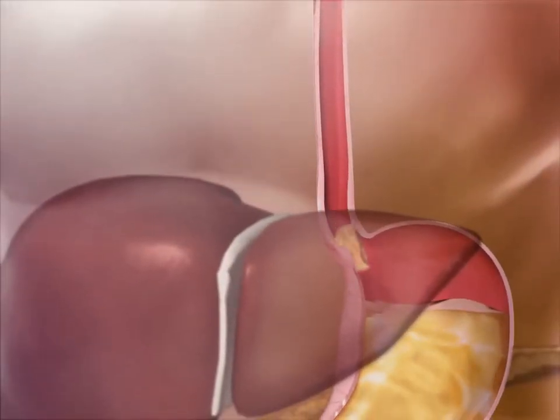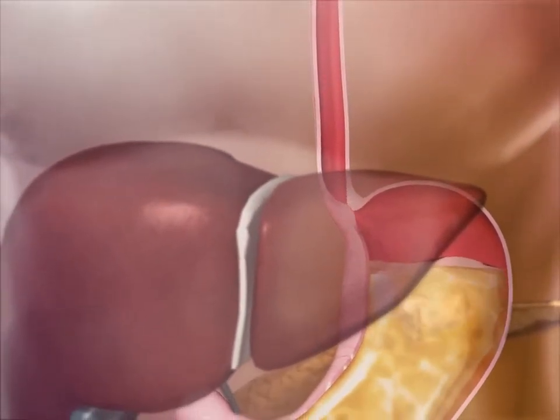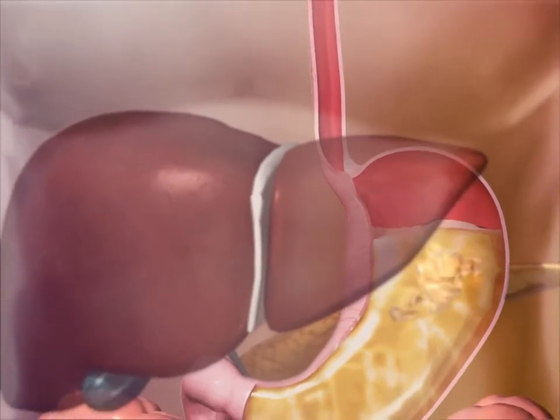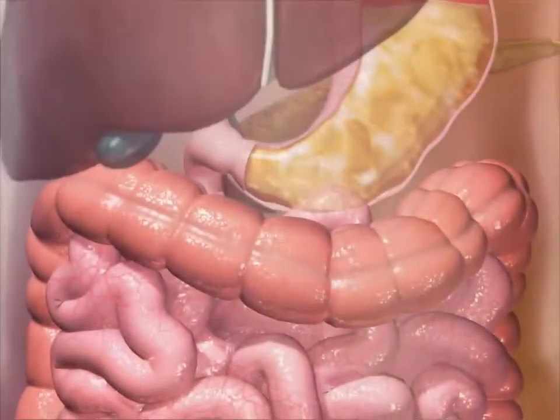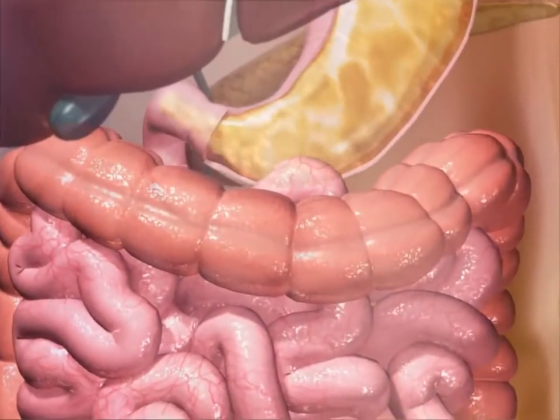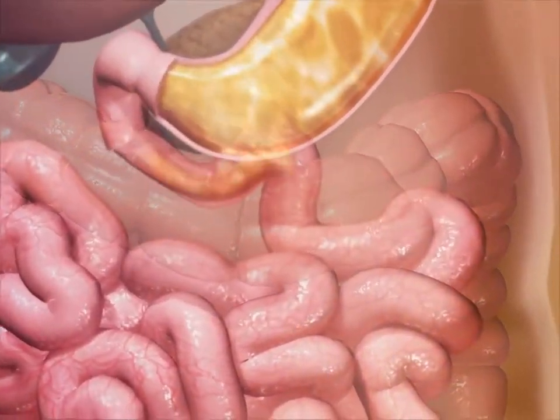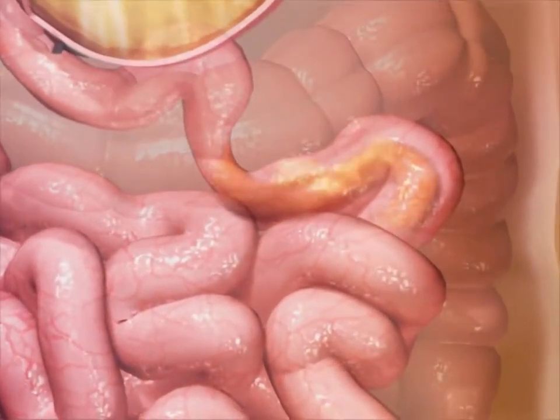The smooth muscle in the digestive tract contracts and relaxes in peristaltic waves that move swallowed food and nutrients from the mouth through the stomach and the intestines.